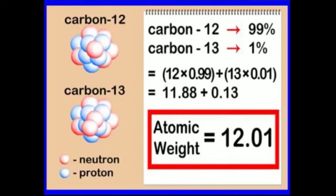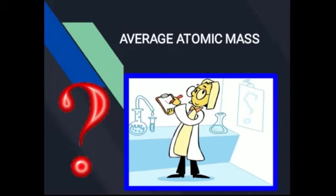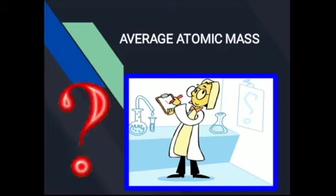اس سے ایک اور example دیکھ سکتے ہیں: carbon-12 اور carbon-13 — carbon-13 کی atomic mass 13 ہے اور carbon-13 1% پایا جاتا ہے۔ Percent abundance کے formula میں put کریں — answer آپ کے پاس 12 آئے گا۔ امید ہے average atomic mass کا concept آپ کو سمجھ آ گیا ہوگا۔ اس video کو دوبارہ دیکھیں اور کوئی confusion ہے تو discuss کریں۔ Next topic کے ساتھ انشاءاللہ پھر ملاقات ہوگی، till then اللہ حافظ۔